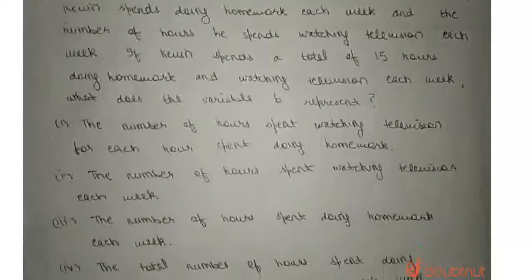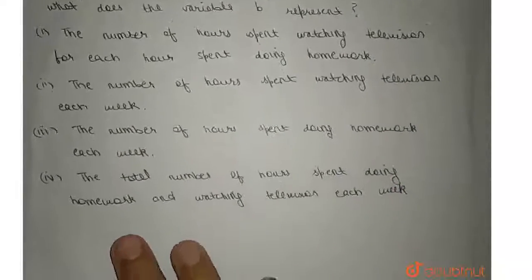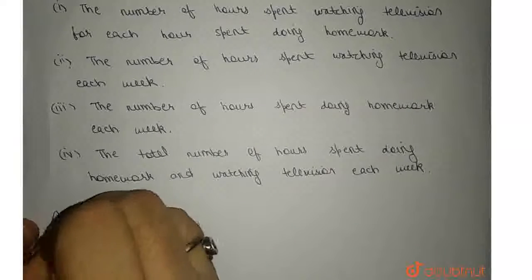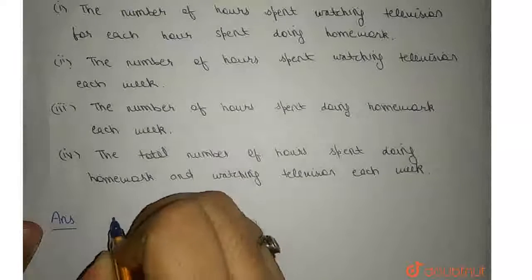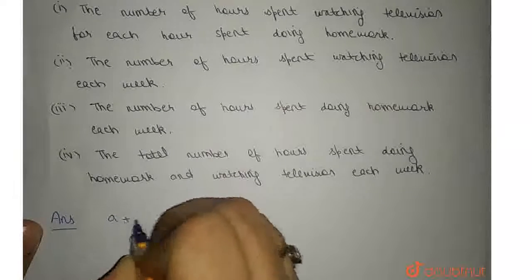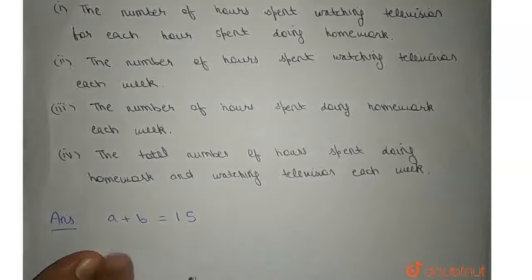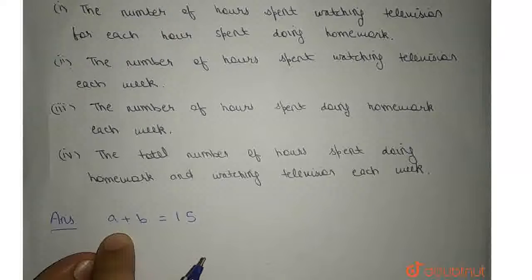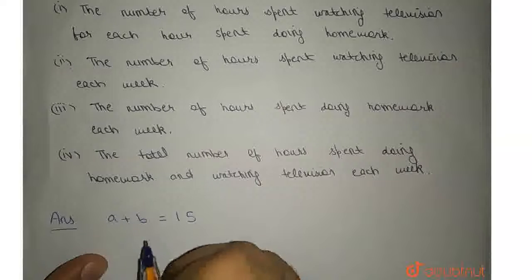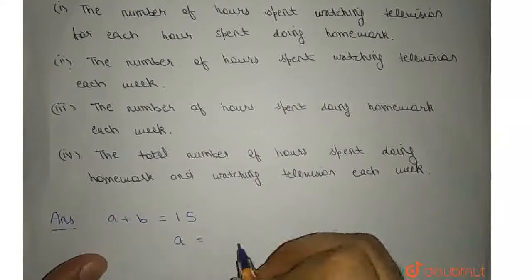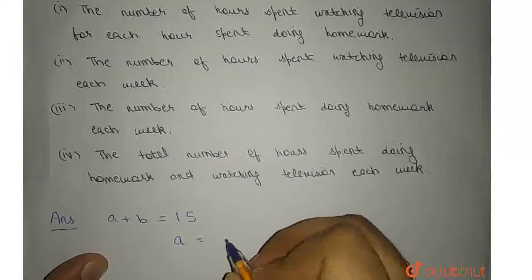Let us proceed with our answer. This is a very easy equation that we are given: A plus B is equal to 15. We are also given that A represents the number of hours he spends doing his homework, and 15 is the total number of hours he spends doing both — that is, doing homework and watching television.